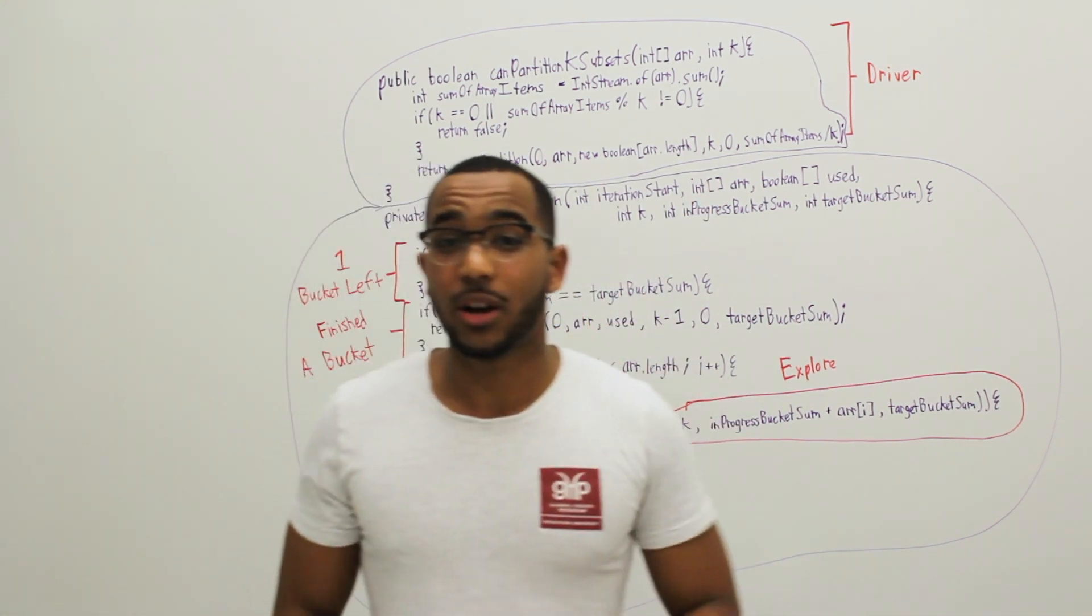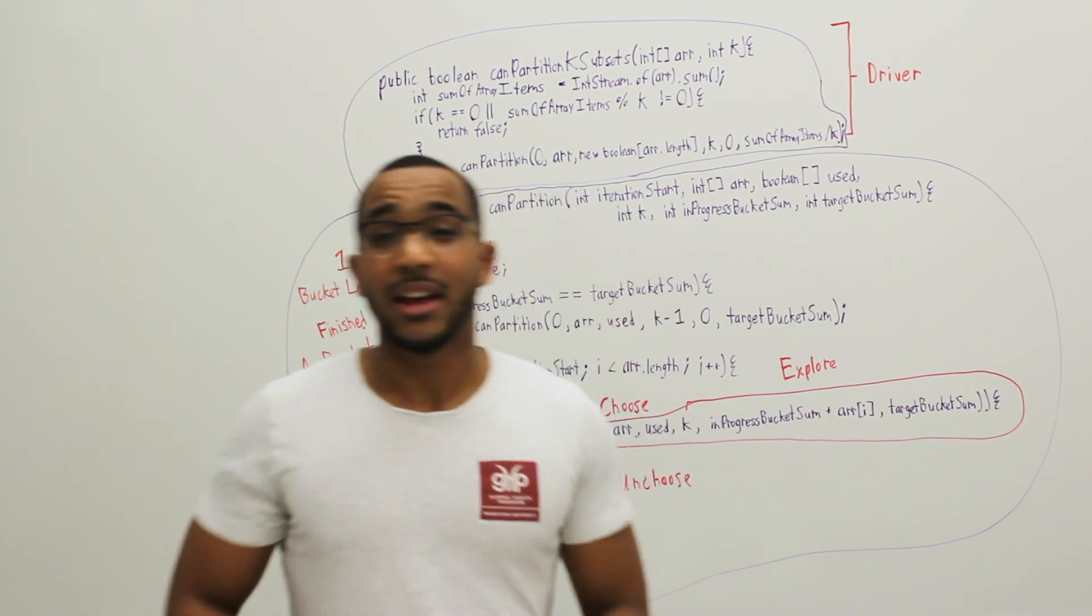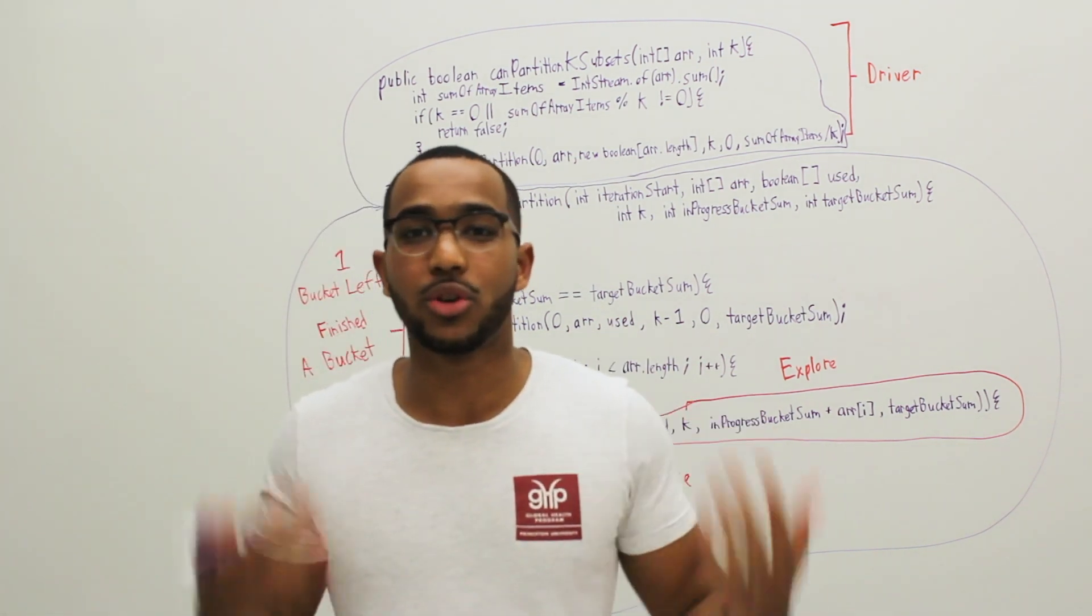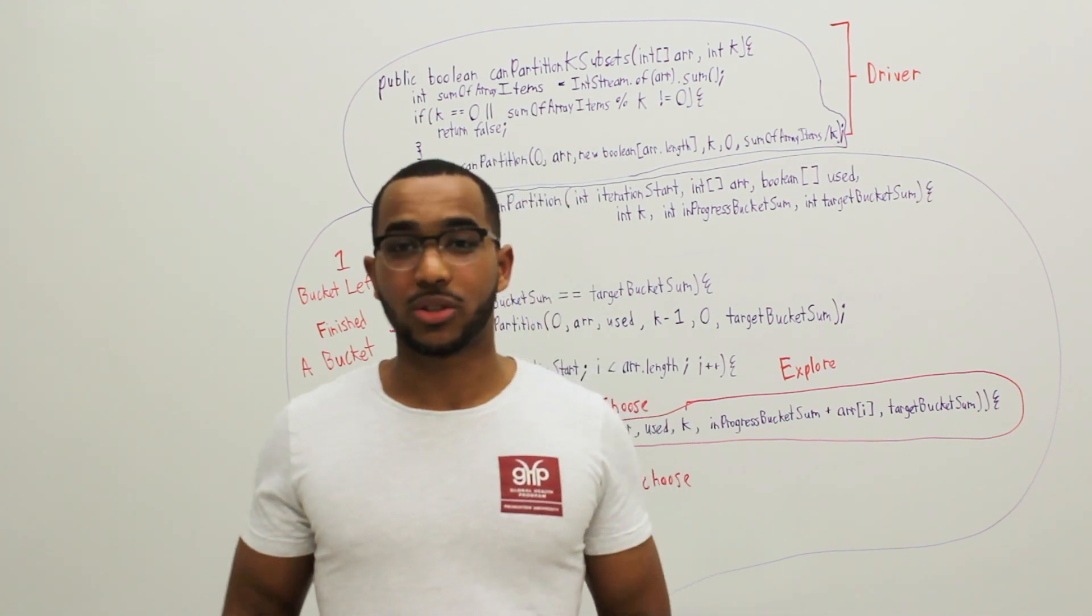We have a Boolean array. We could use a set of sorts. We could use a Boolean array. It's just the Boolean array is more convenient. We want to know what items we've already used.